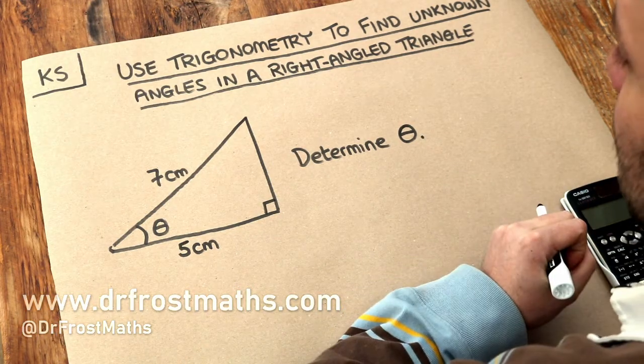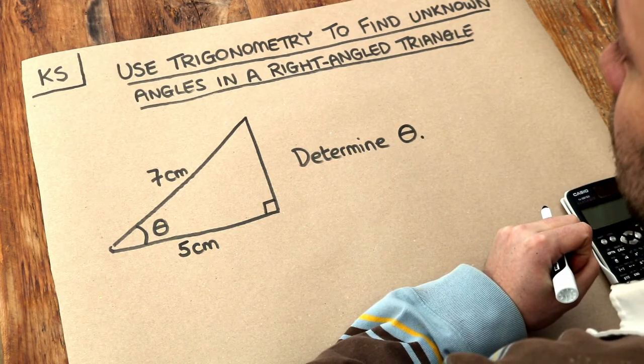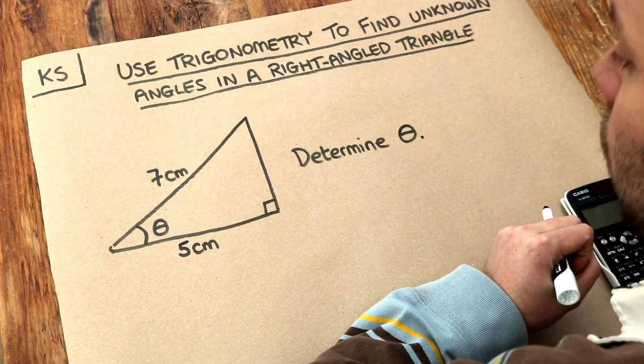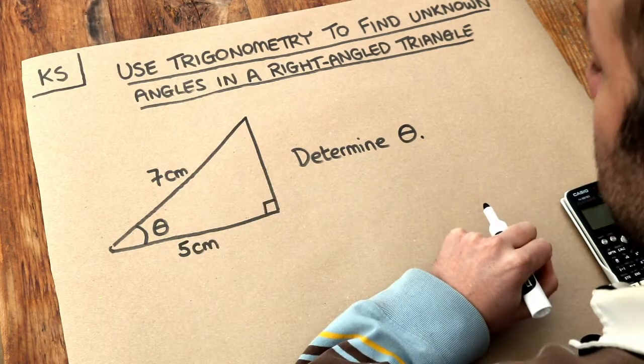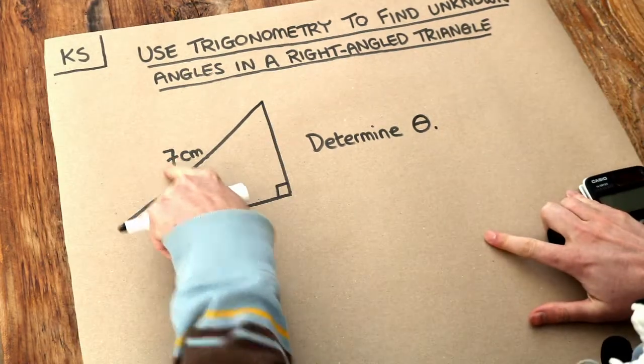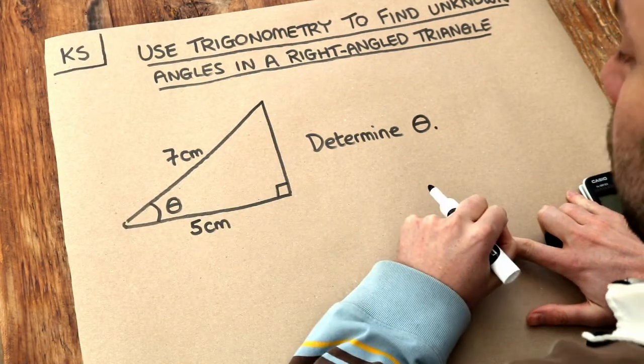I'm assuming in this video that you already know how to find the length in a right angle triangle given an angle and another length. But this time we've got two of the lengths and it's the angle that's unknown.